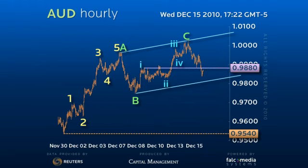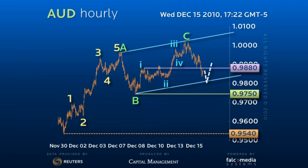This leaves the short-term risk lower for a test of 97.80 and possibly the interim 97.50 low. While this area holds, it allows for an interim upside correction to about 99.50.